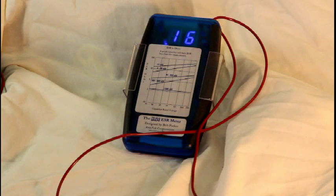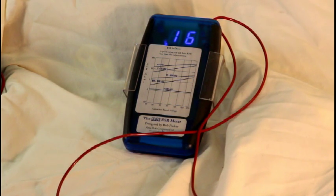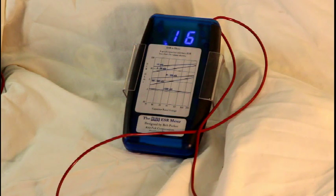ESR is a function of the capacitance value and also the rated voltage, which is why no ESR meter can give you a good-bad indication because there's no way for the meter to know what the rated voltage of the capacitor is. So we provide a graph on the front of the meter to help you determine good or bad.